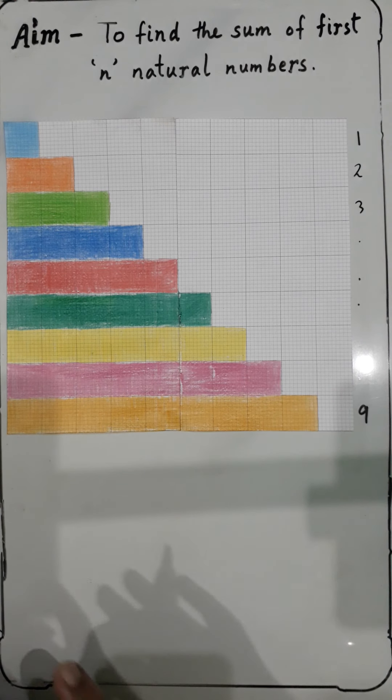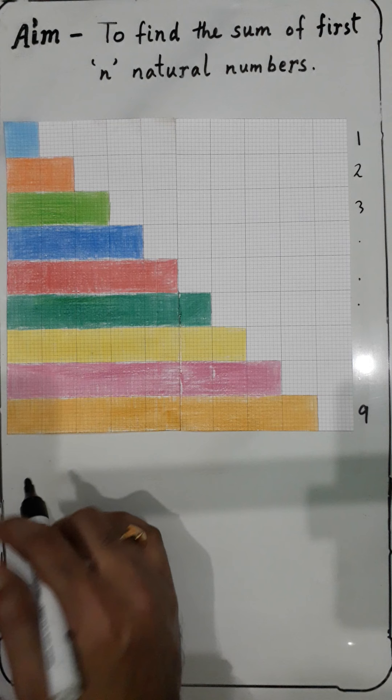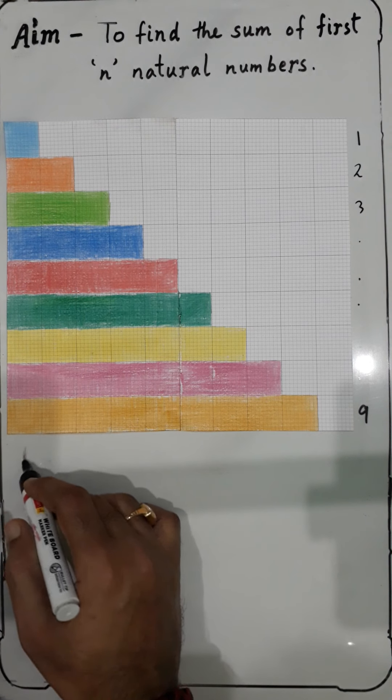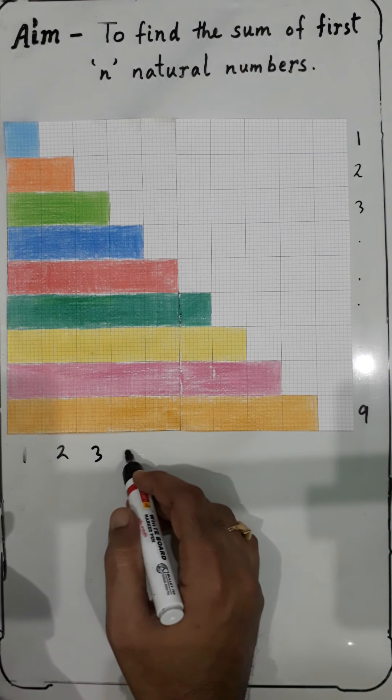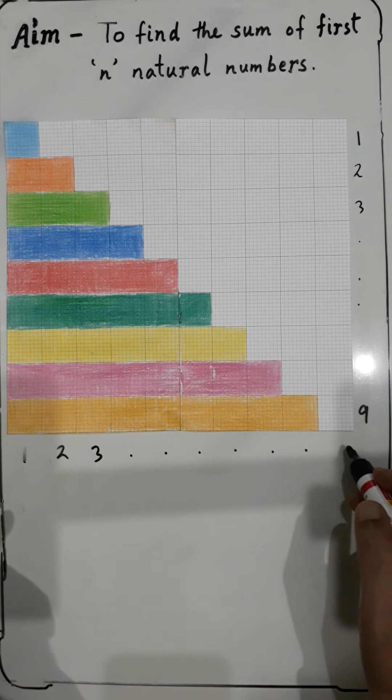If you observe this part, you'll see that if this is nine, this is one more than that, which means one, then two, three, four, five, six, seven, eight, nine, and this is ten.